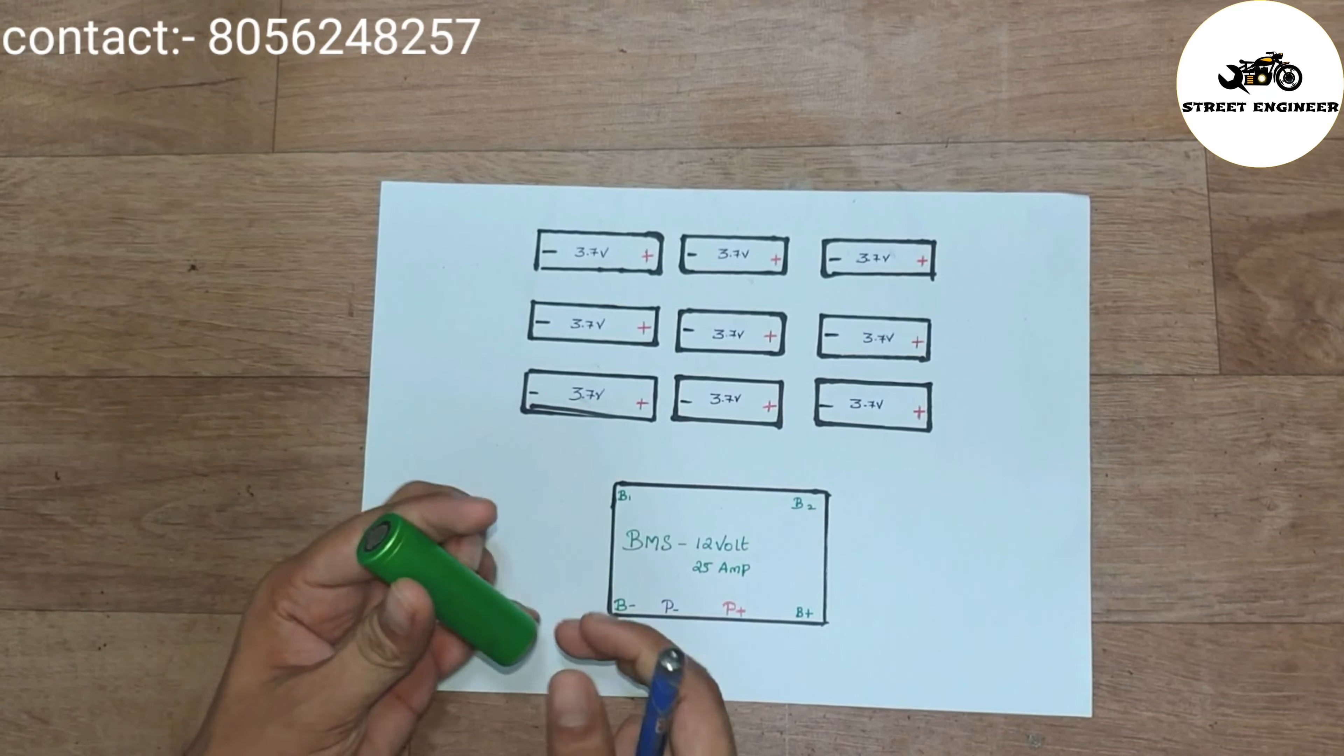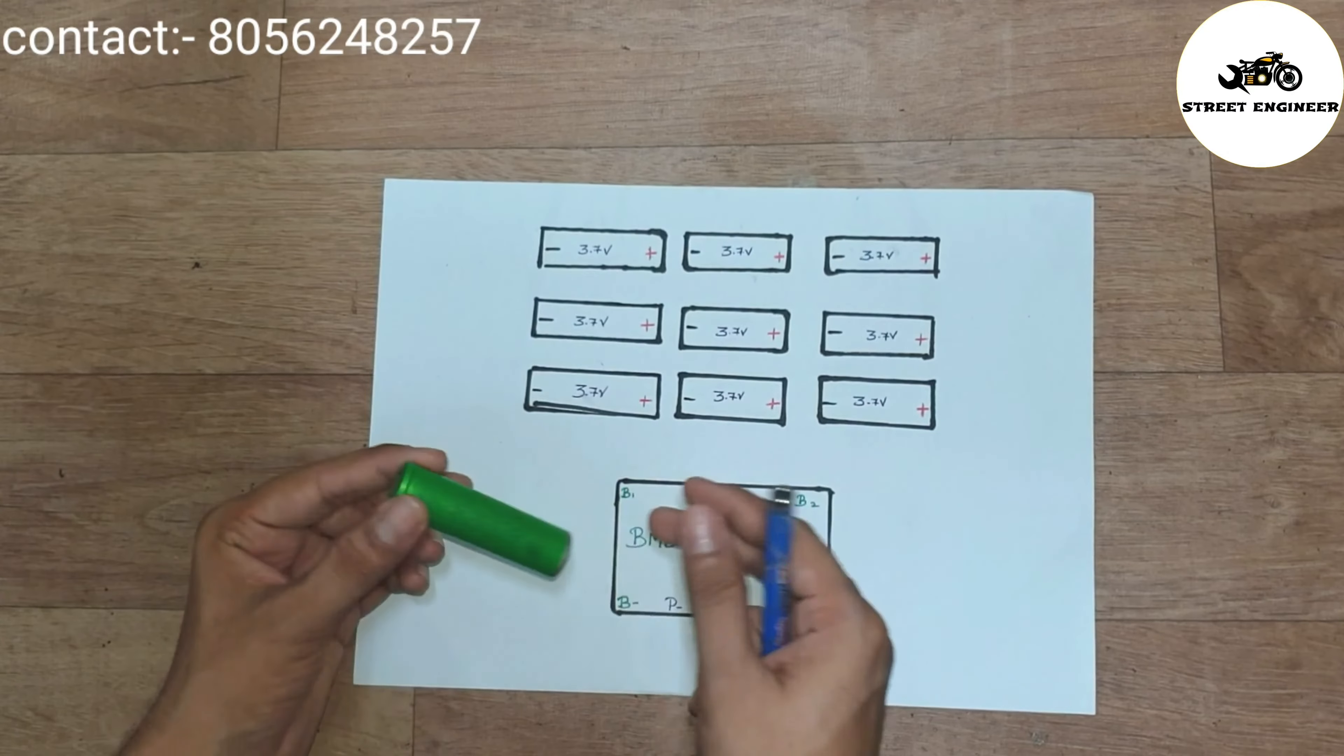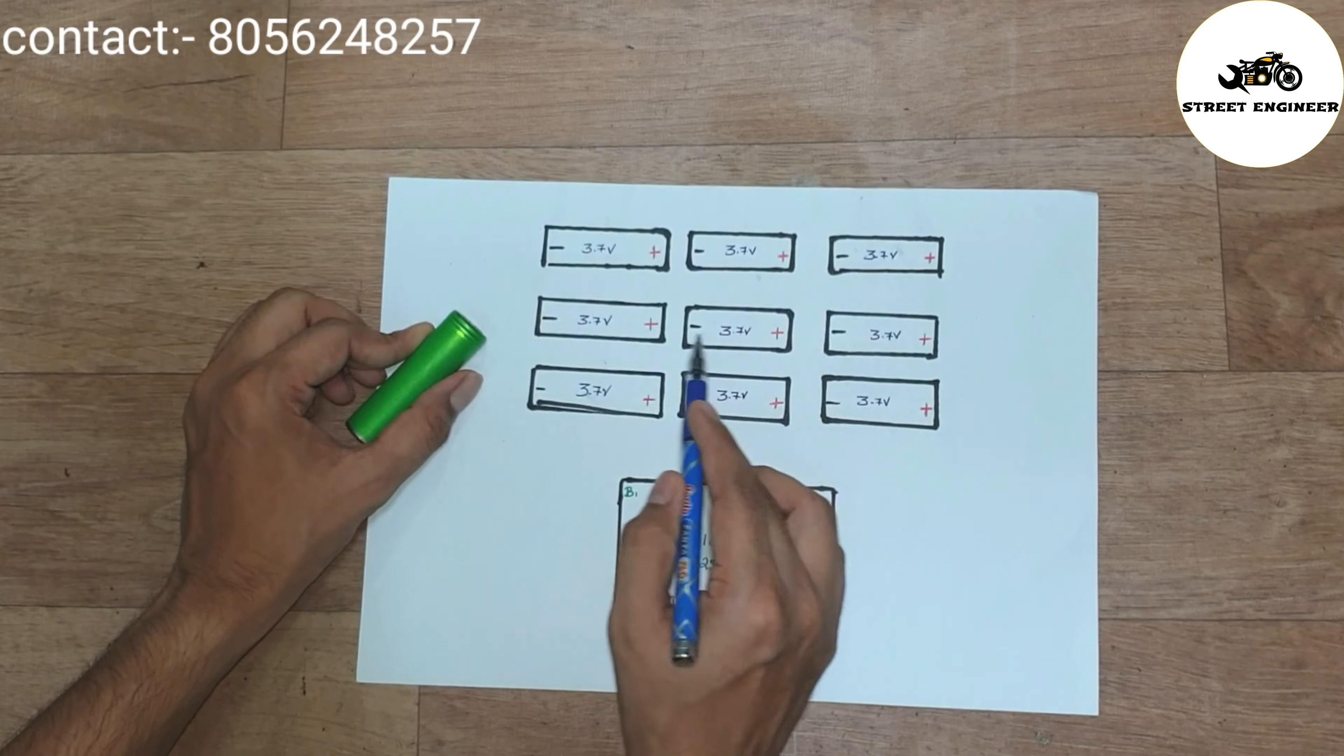I am using this 3.7V 2AH lithium-ion cell. To make 12V 6AH battery pack, I need 9 cells, 3 series and 3 parallel.